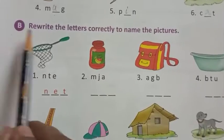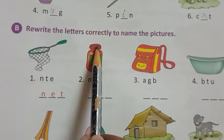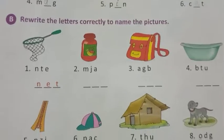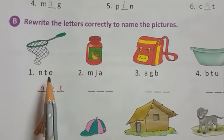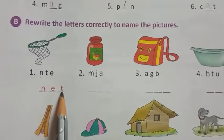Next exercise is B: Rewrite the letters correctly to name the pictures. Here, look at N, T, E. This is jumbled. If we correct it, then it is N, E, T - net.